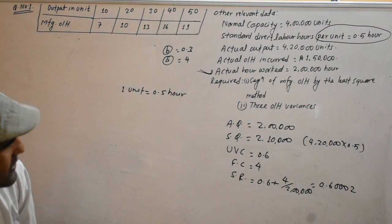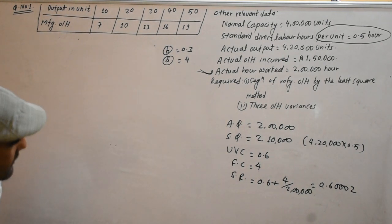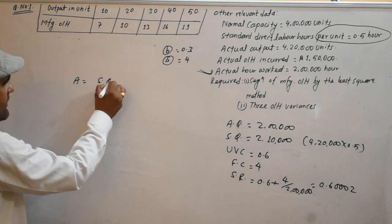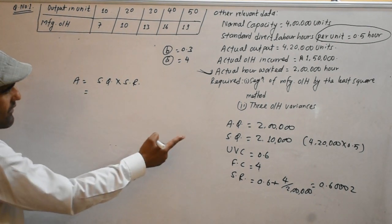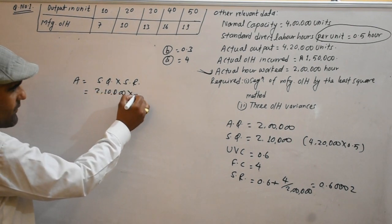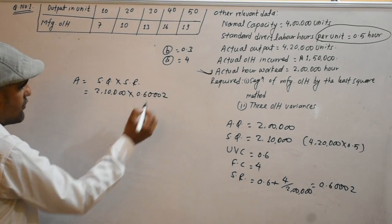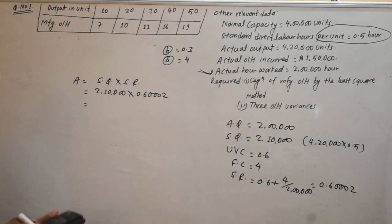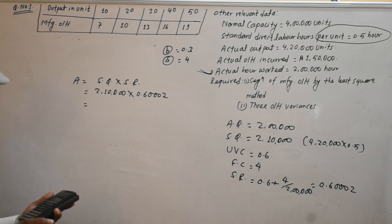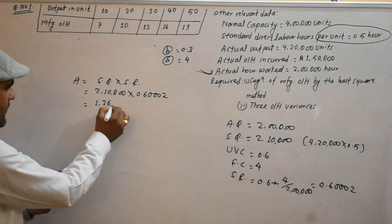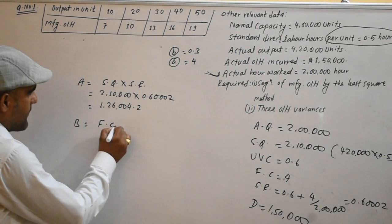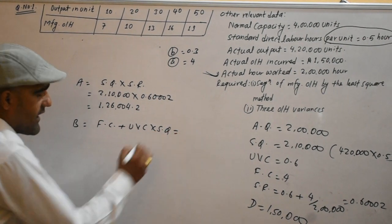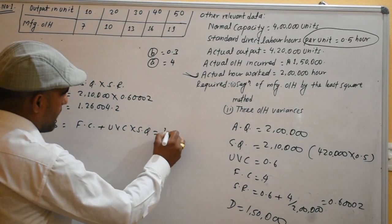Now we have the three overhead variances: SO equals 3-way variance. Point A equals standard quantity times standard rate. Standard quantity is 2,10,000 hours and standard rate is 0.6002, so A equals 2,10,000 times 0.6002, giving approximately 1,26,004.2. Point C (actual overhead UBC) equals 1,24,000.